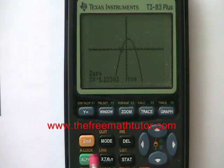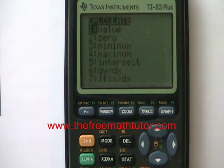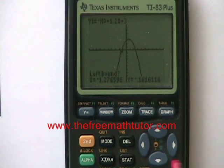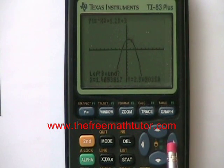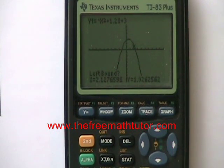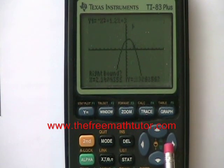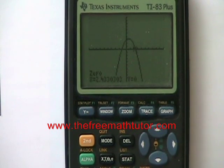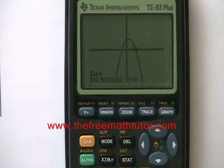To find the right root, I do second trace again, choose 0 again, enter. Move the cursor just to the left of the second root, hit enter. Move it again to the right of the second root, hit enter, and hit enter again. And I find another 0 at 2.433.